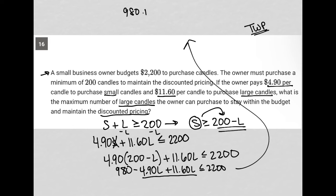980 plus 6.70 L is less than or equal to 2200. Subtract 980 from both sides. I have 6.70 L is less than or equal to 2200 minus 980 in the calculator. 1220. Divide both sides by 6.7.